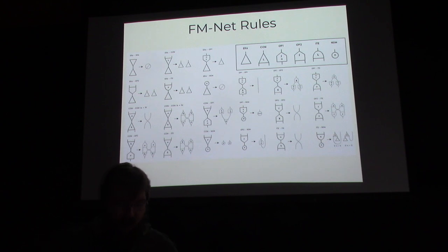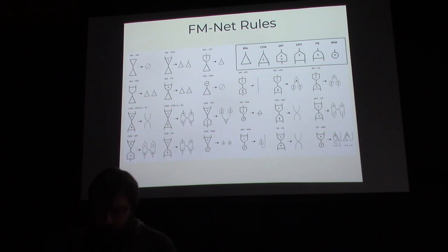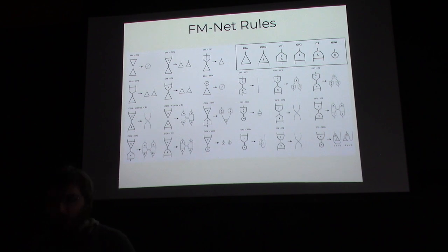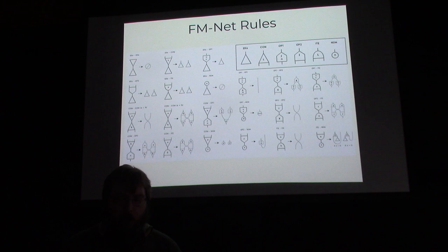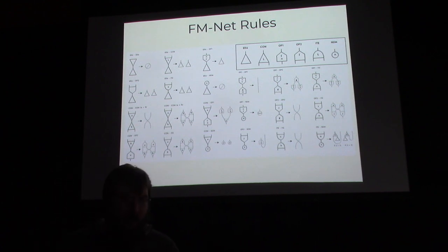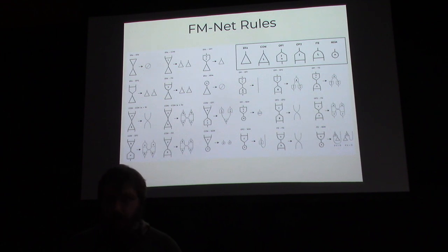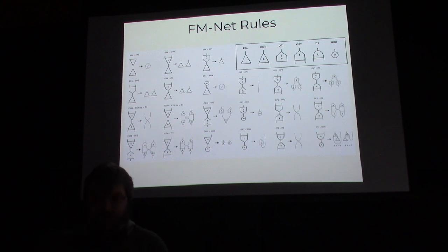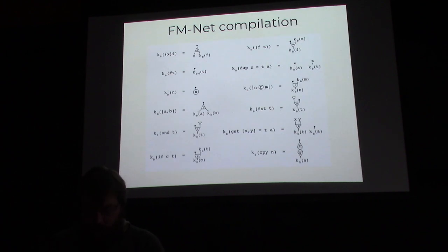This is what it looks like: we have six different node types and a whole bunch of reduction rules — graphic rewrite rules where you take the thing on the left and it turns into the thing on the right. The last four node types aren't strictly necessary to the expressive power of the system; they're only there so we can make use of native numerics and numeric functions that run really fast on practical computing devices. We could do numeric computation with just eraser nodes and constructor nodes, but everything would be modeled as Church numbers, which is very slow.